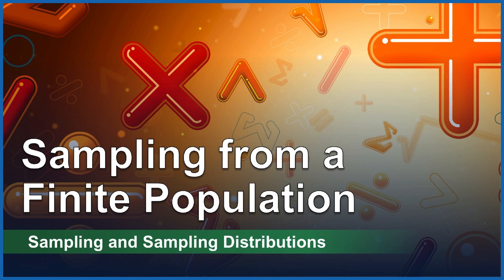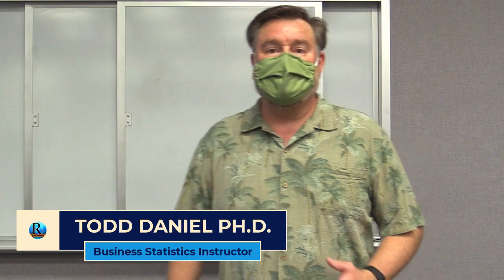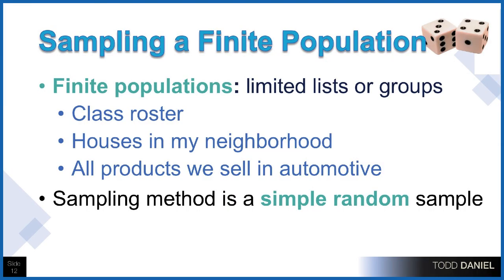Our next topic is sampling from a finite population. Let's begin by answering the question: what is a finite population? A population is finite when it is limited. There's a limited list, a set of groups, like a class roster. If I have a list of everyone who's enrolled in the class, that is a finite population.